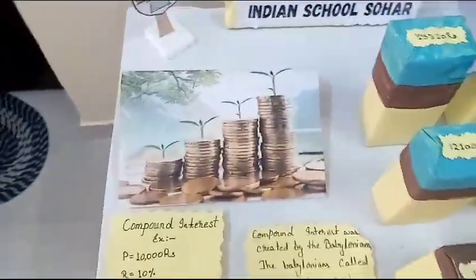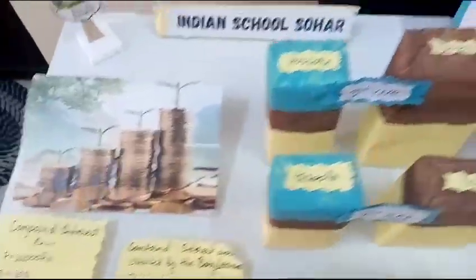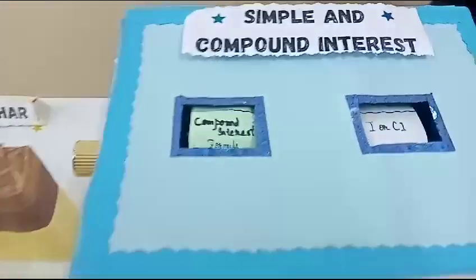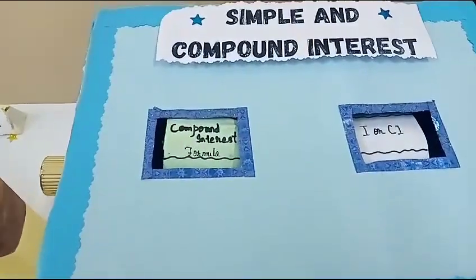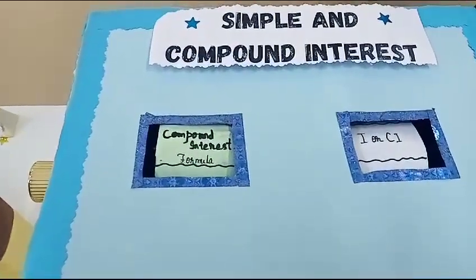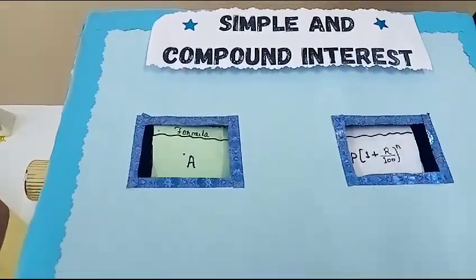Compound Interest is an interest charge that is calculated using the principal and the accumulated interest of the previous periods. Thus, it can also be referred to as interest on interest. CI is the short form of Compound Interest.